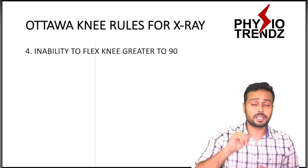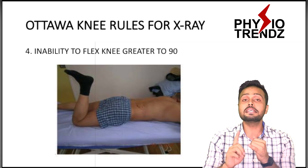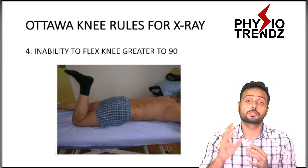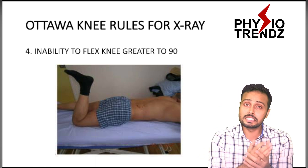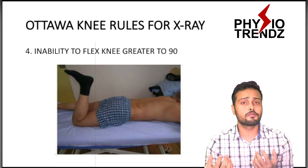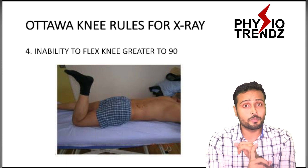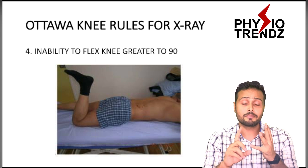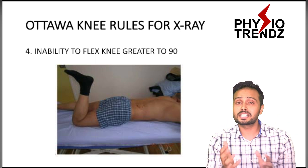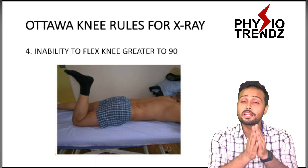The fourth point is inability to flex the knee greater than 90 degrees. This happens whenever after a trauma injury, the patient tries to actively or passively perform knee flexion and is unable to — this can indicate injury to the meniscus, ligament injury, or condylar injury. In such cases, we should definitely go for x-ray investigation.